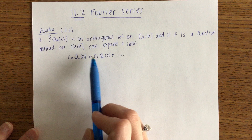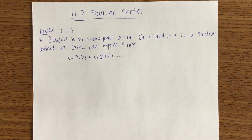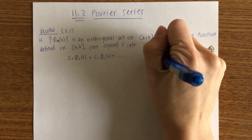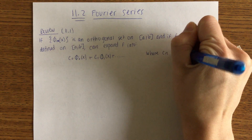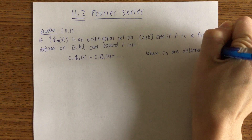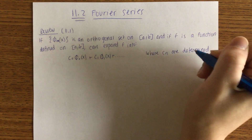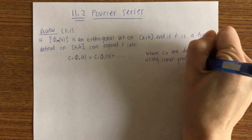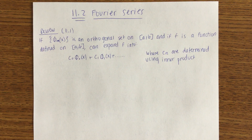Anybody recall how to find c_0 and c_1? The c_n is equal to the integral — it's like the inner product of f of x times phi_n of x over the norm squared or something like that. We're just going to say it's determined using the inner product. So this is the idea behind the Fourier series. Fourier series, though, is going to use a very specific orthogonal set.